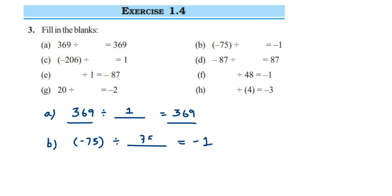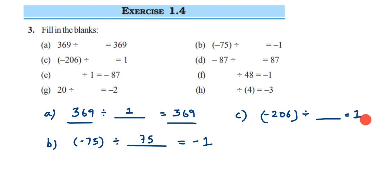Problem c: -206 divided by what gives 1. The final answer is 1, which is positive, and the number is negative. We know that dividing a number by itself gives 1. So here it will be -206, because minus divided by minus cancels out and we get a positive sign.